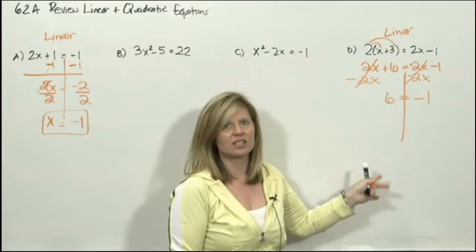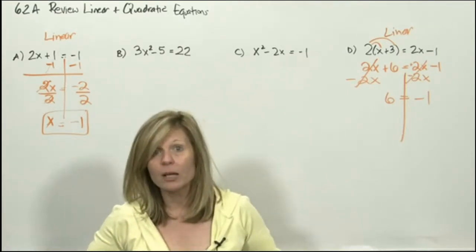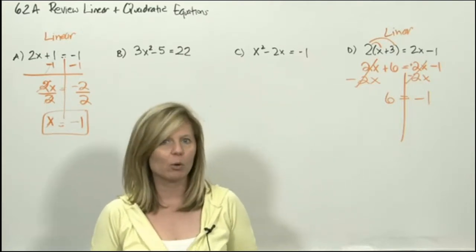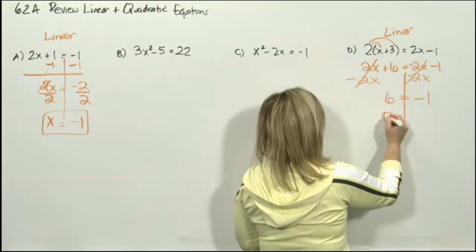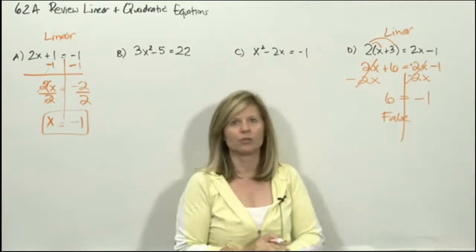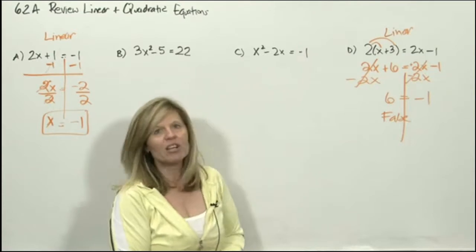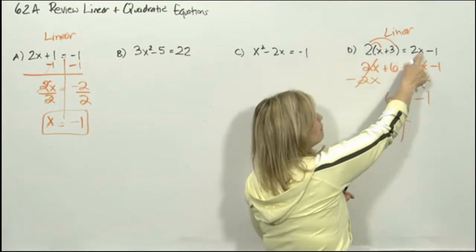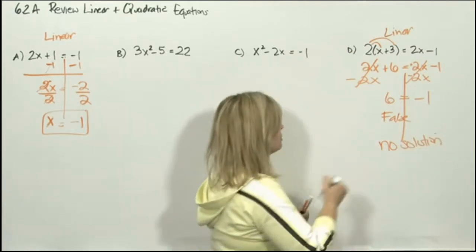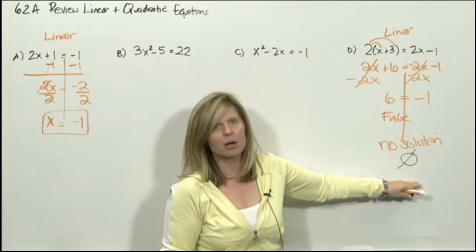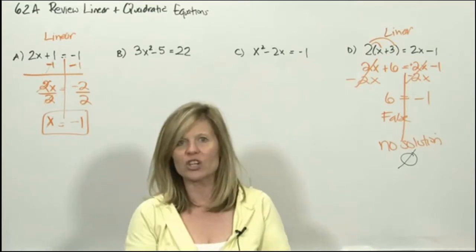So does this mean the answer for x is 6 and negative 1? No. You don't have an x anymore — you have lost your variable. You should remember from Algebra 1 and College Algebra that when you lose a variable while solving, the statement you get is either true or false. This is a false statement — in our lifetime, 6 will never equal negative 1. So there is no solution. We write this as 'no solution' or use the symbol Ø, which is never the number 0 or the symbol for theta — it is the symbol for no solution.